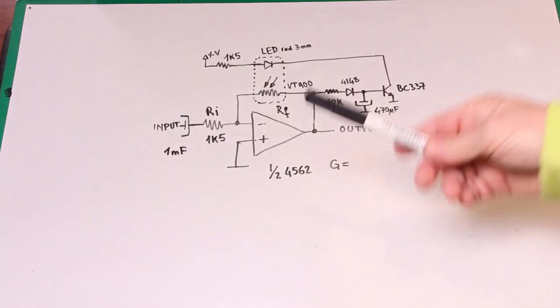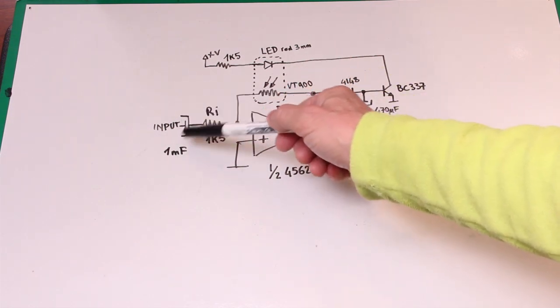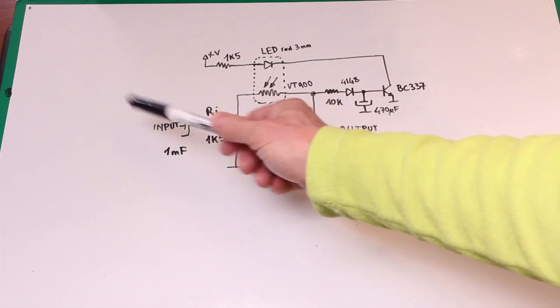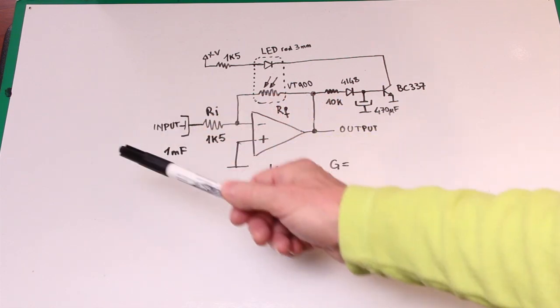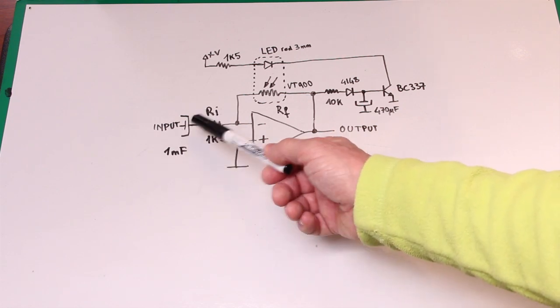So this is the circuit. The input capacitor has the function to decouple the DC component from the input and it is quite large to accommodate the lowest frequencies.